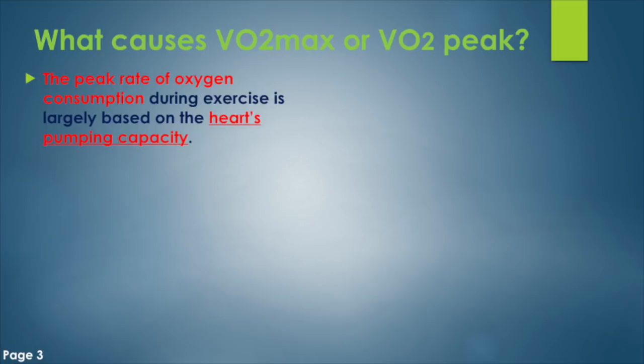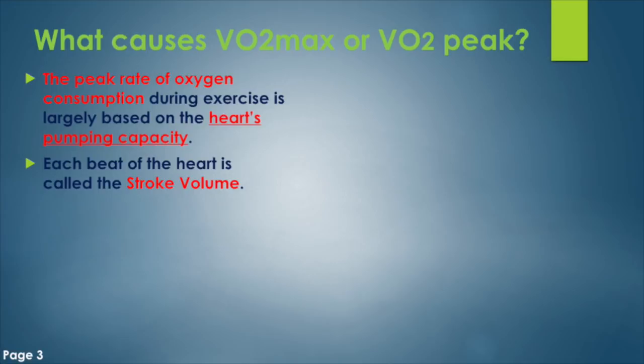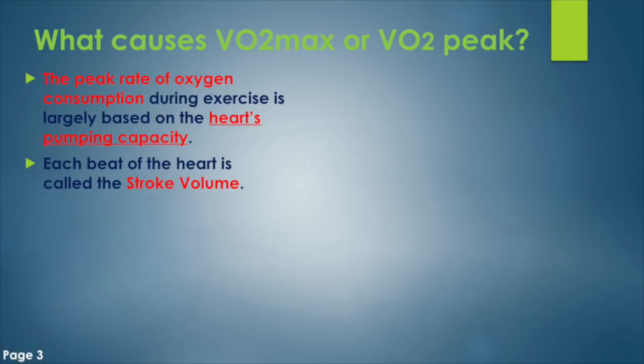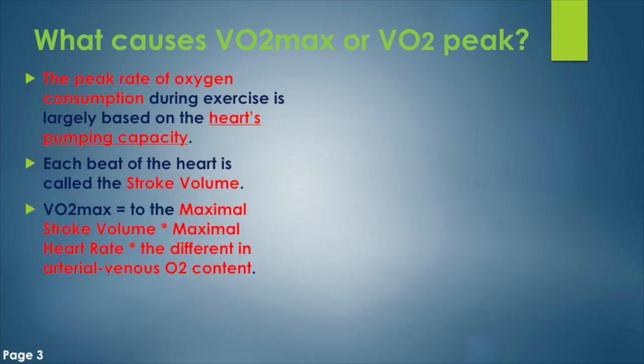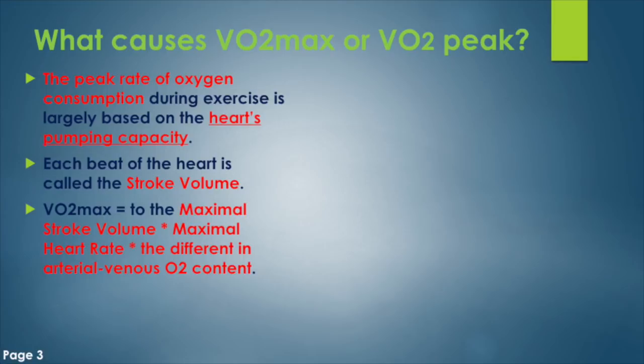Peak rate of oxygen consumption is greatly influenced by the heart's capacity to pump blood — that's central to VO2 max, literally and figuratively. The maximum amount of blood pumped from the heart is called stroke volume — that's per beat. The formula for VO2 max is: maximum stroke volume multiplied by maximum heart rate, times the arteriovenous oxygen difference.